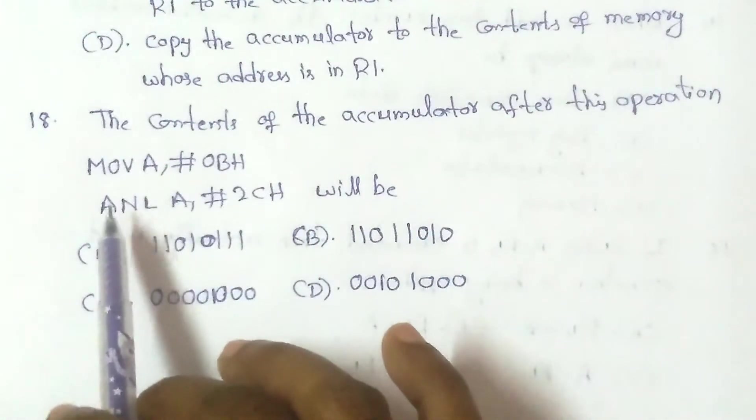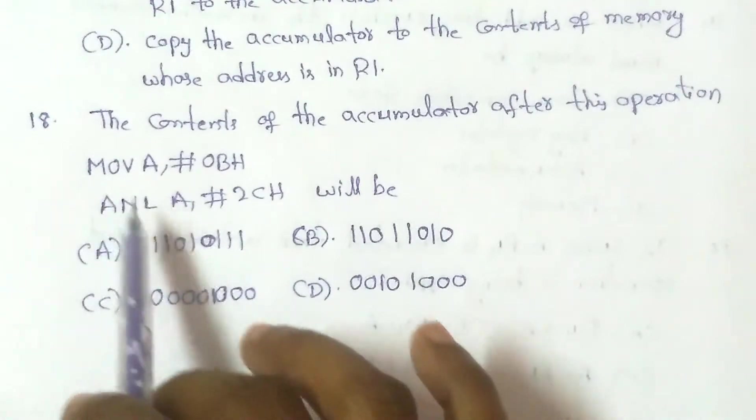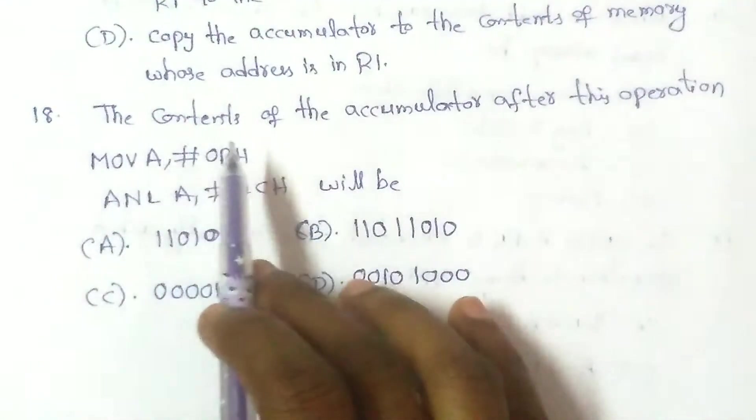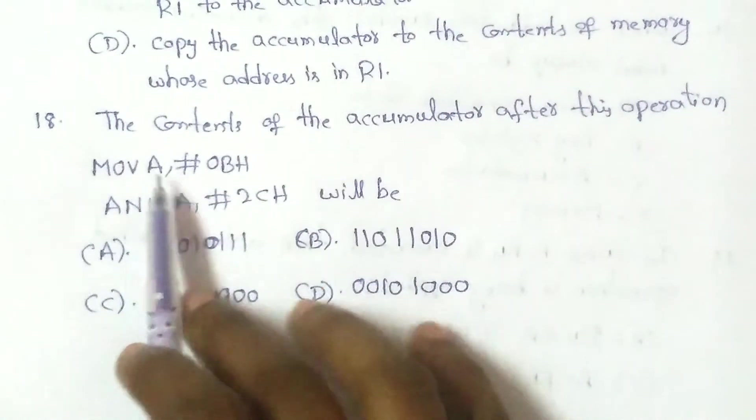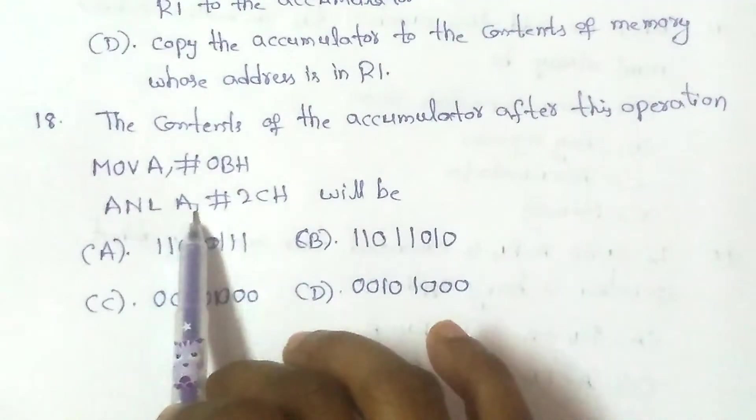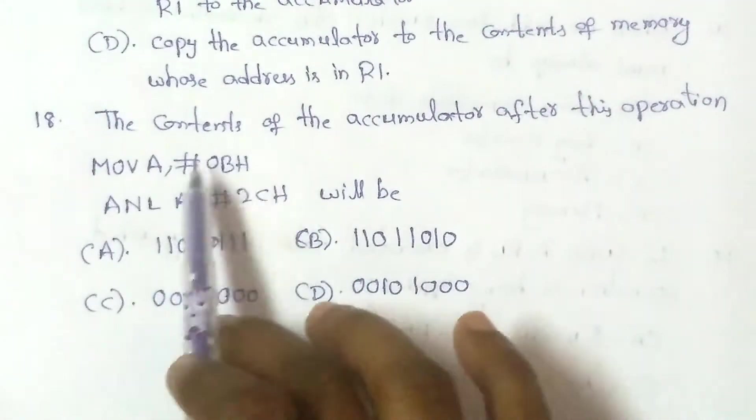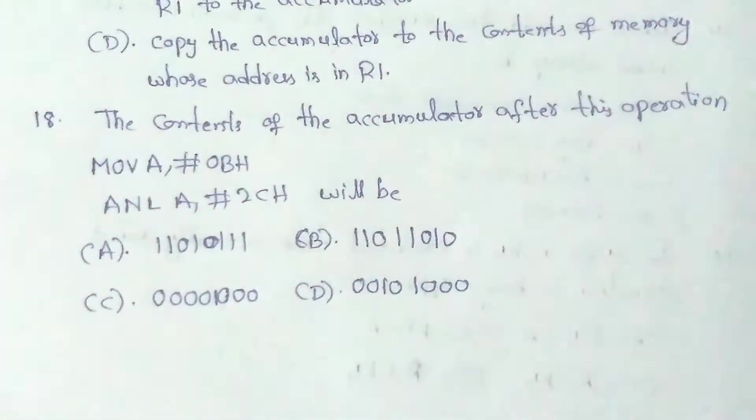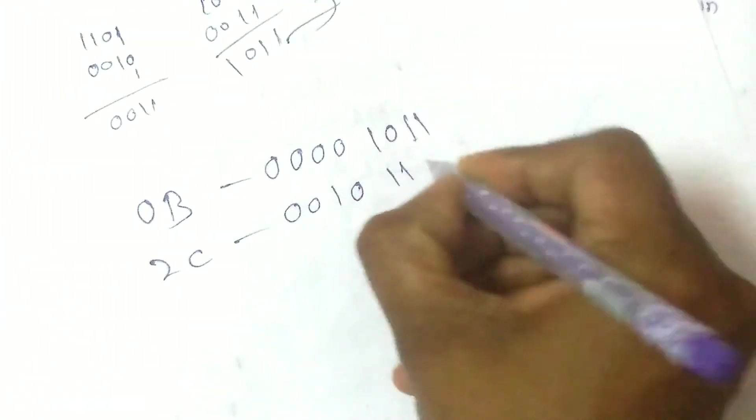Next question: What are the contents of the accumulator after this operation — MOV A, #0BH; ANL A, #2CH? ANL performs a logical AND operation. 0BH = 0000 1011; 2CH = 0010 1100. Performing AND bit by bit: we AND each corresponding bit together.